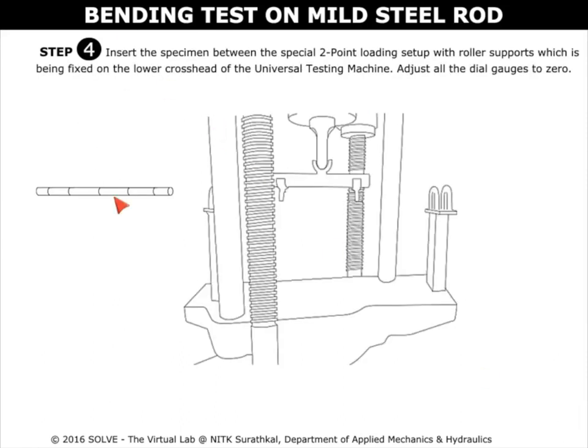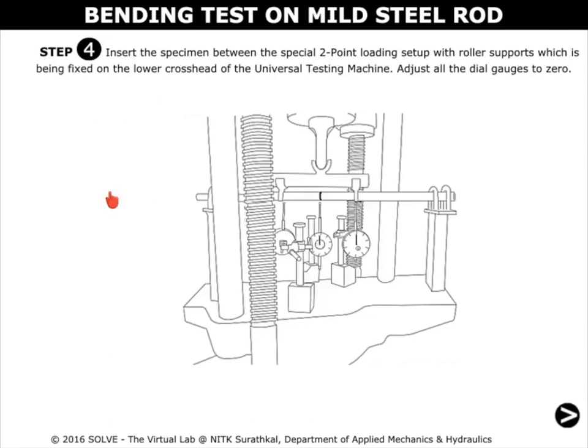Click here to insert the specimen between the special two-point loading setup with roller support, which is fixed on the lower cross head of the universal testing machine.